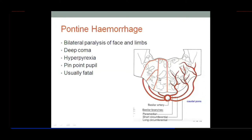If the sympathetic outflow is blocked, the dilator pupillae is inhibited. The constrictor pupillae then dominates, with no impulse to dilate the pupil, so it remains very much constricted. This is described as pinpoint pupils, which is the hallmark feature of pontine hemorrhage.